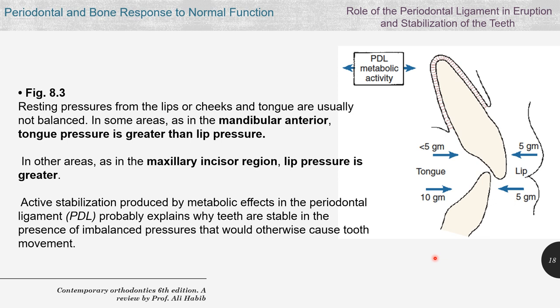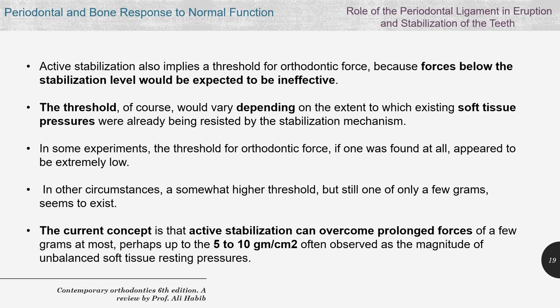If you have bone loss and periodontal loss, you expect the lower teeth to move or flare out — you can see this in patients with periodontal recession and bone loss. This balance is attributed to active stabilization by the metabolic effects in the PDL. The concept of active stabilization force of the PDL implies that there is a threshold for orthodontic force — if you want to move teeth, you have to have a force higher than the threshold.